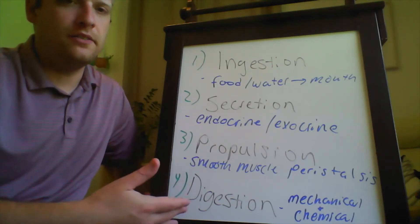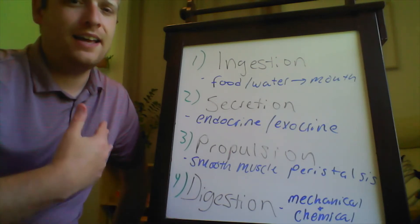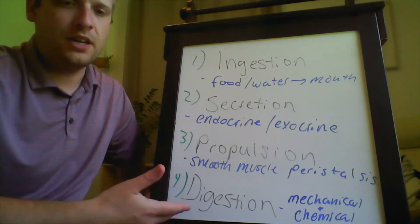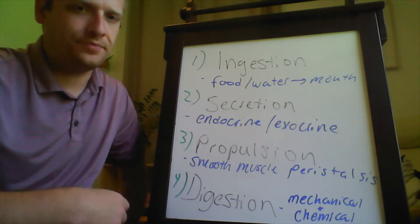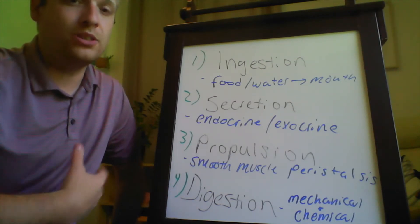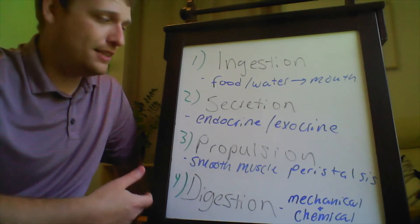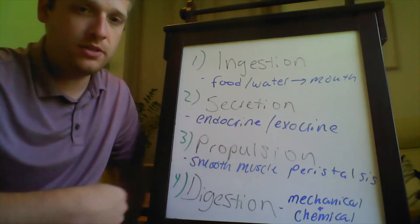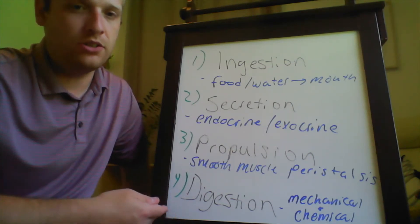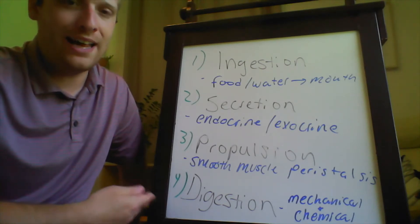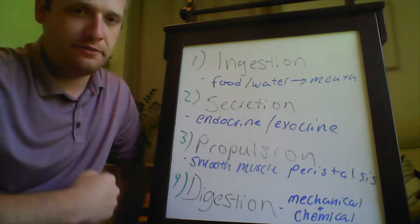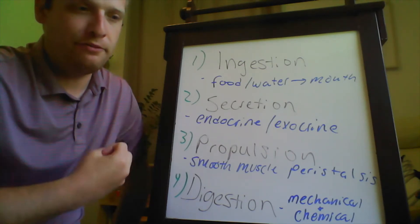When talking about the function of digestive organs, you can break these functions down into six categories. The first is ingestion — taking food or water in through the oral cavity into the digestive tract. The next is secretion: the digestive system releases substances that aid in digestion. These can be endocrine — hormones that regulate how cells function in the digestive system — or exocrine secretions, which include substances like mucus or enzymes that also aid in the digestive process. Once you swallow a bolus of food — a bolus being the term for the lump of food you swallow — that bolus is propelled throughout the alimentary canal.